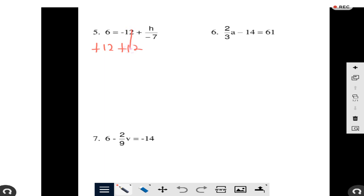So it's going to cancel, and I'm going to put my variable with a fraction, or h over negative 7, on the left hand side, and 6 plus 12 is going to be 18, that's going to come to the right hand side.